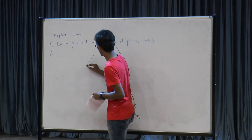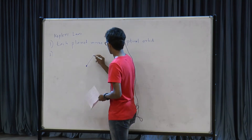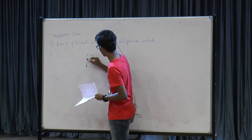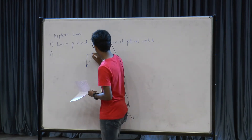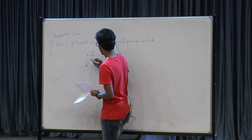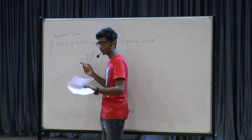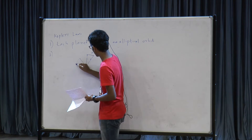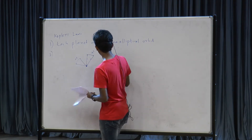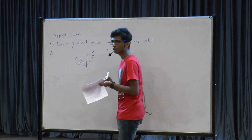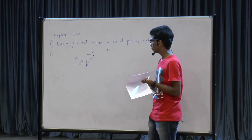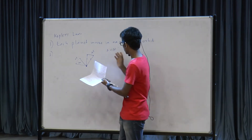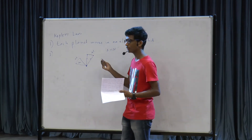Suppose the Sun is over here and the planet is over here at some initial time, and then it goes over here. The area swept by this vector in time delta T is, say, A. Now suppose the planet is over here after some time, and this vector sweeps another area A2 in the same delta T. These two areas are equal — the area swept by the vector is proportional to the time.